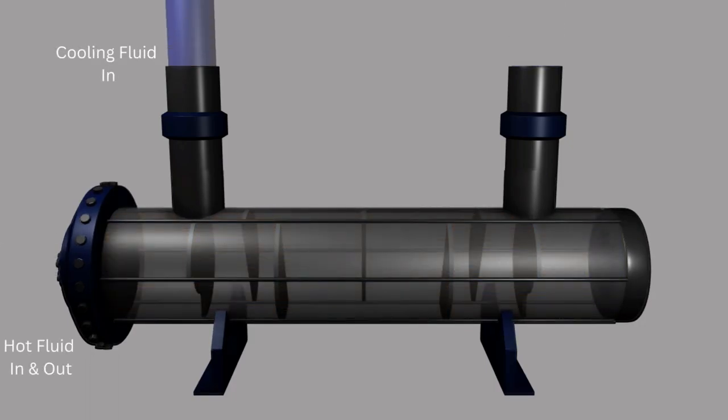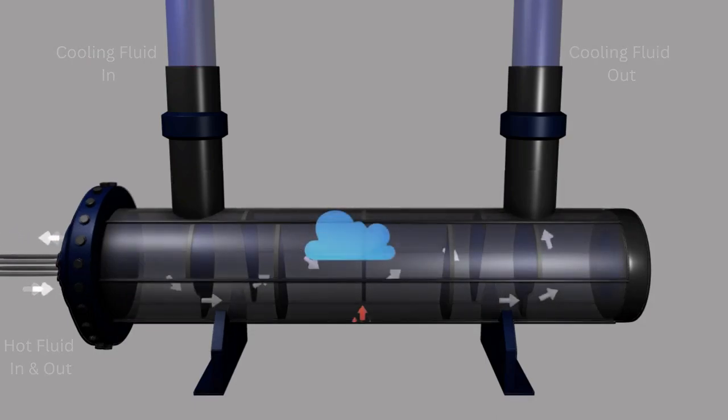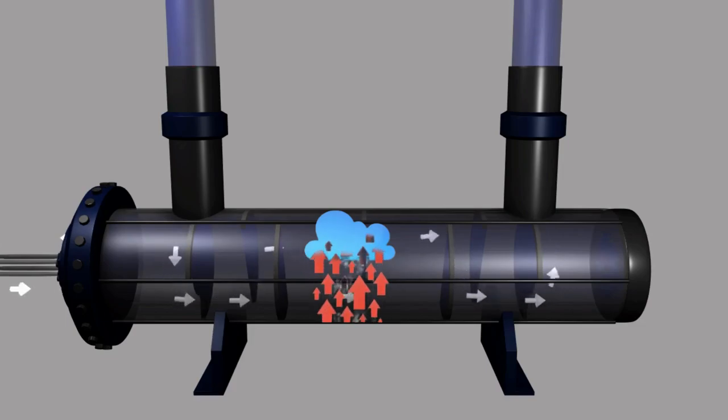During operation, the hot fluid flows through the tubes while the cooling fluid flows through the shell. As the fluid flows through the heat exchanger, thermal energy is transferred from the hot fluid to the cooling fluid.